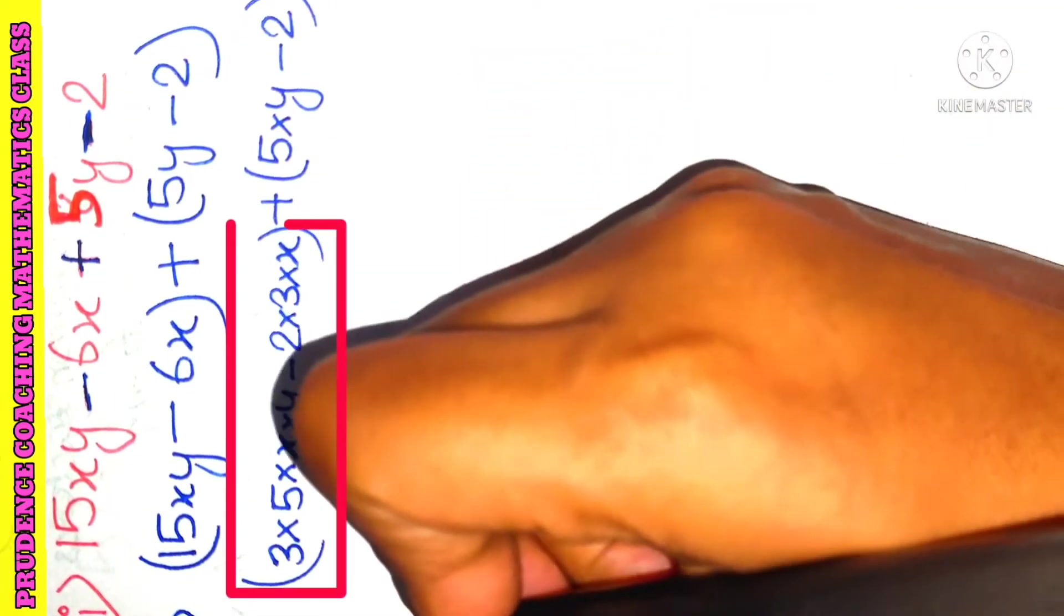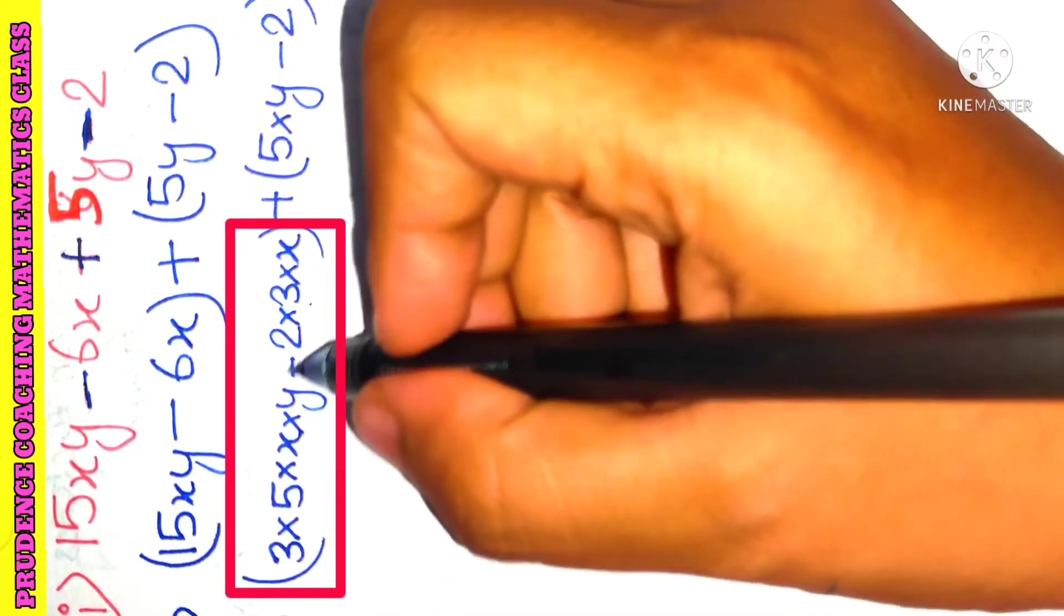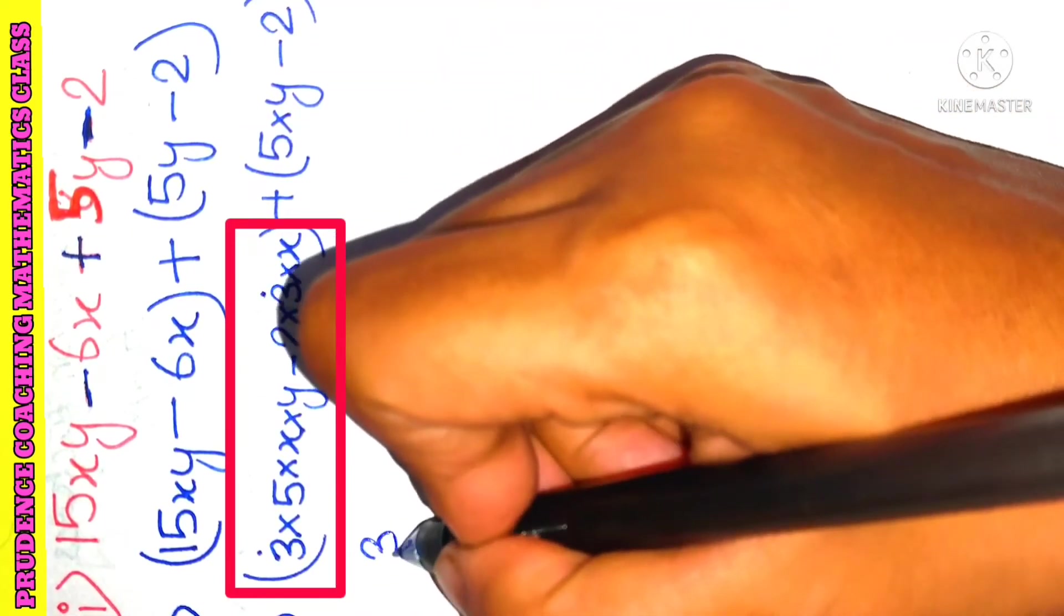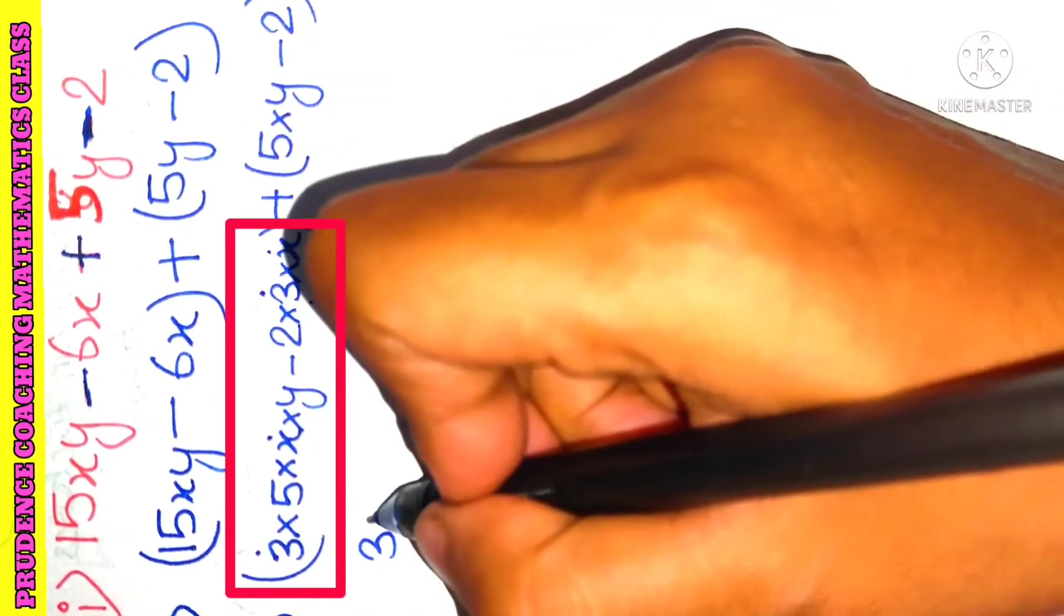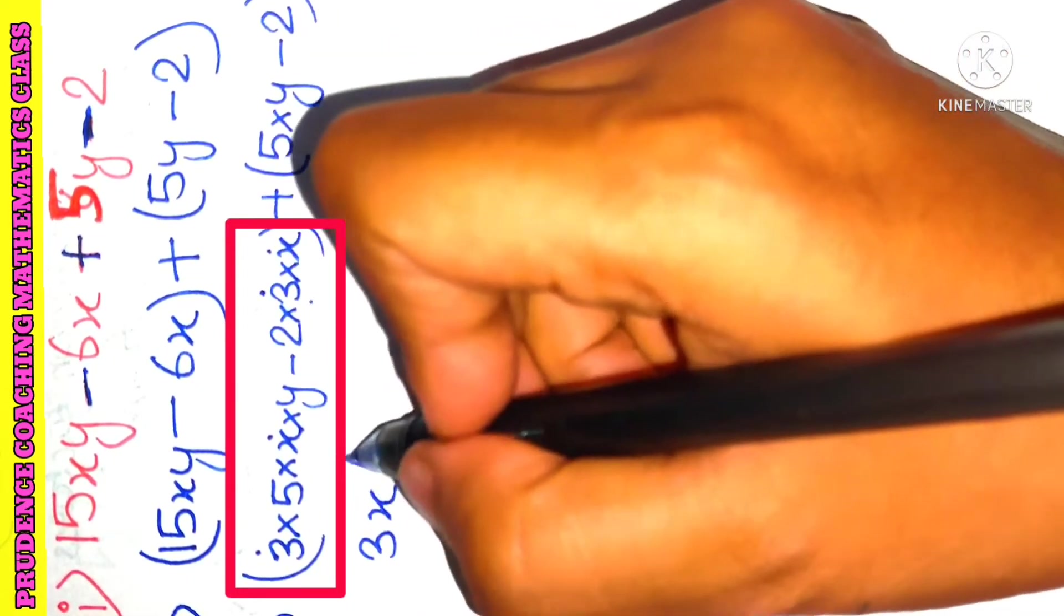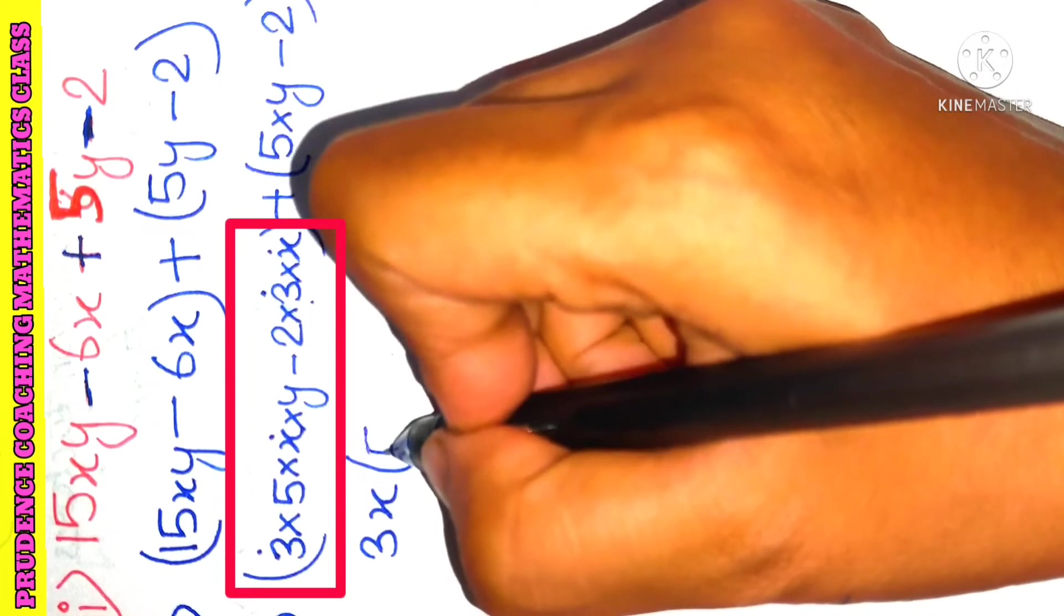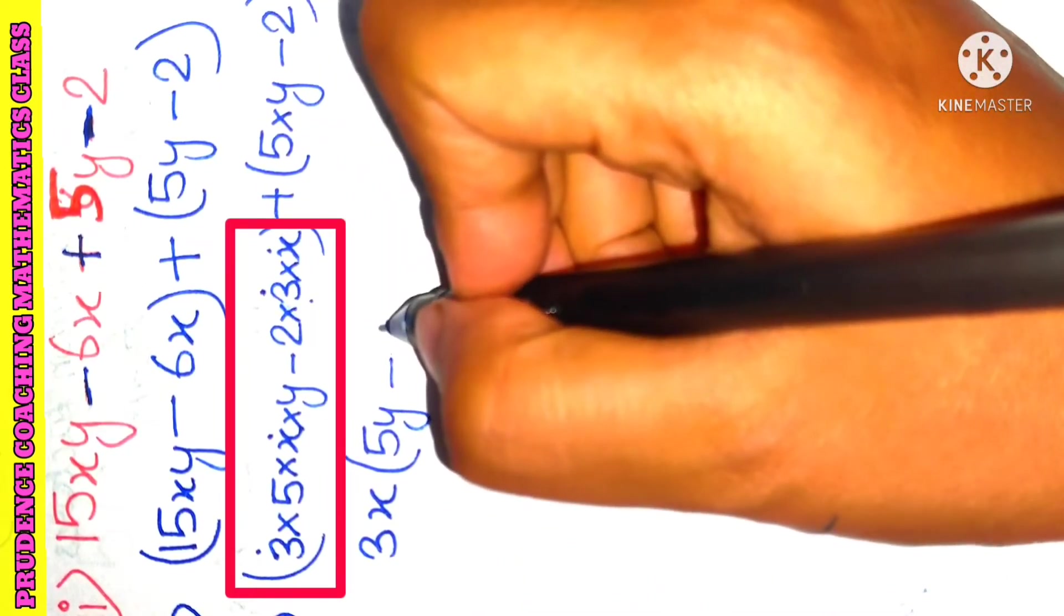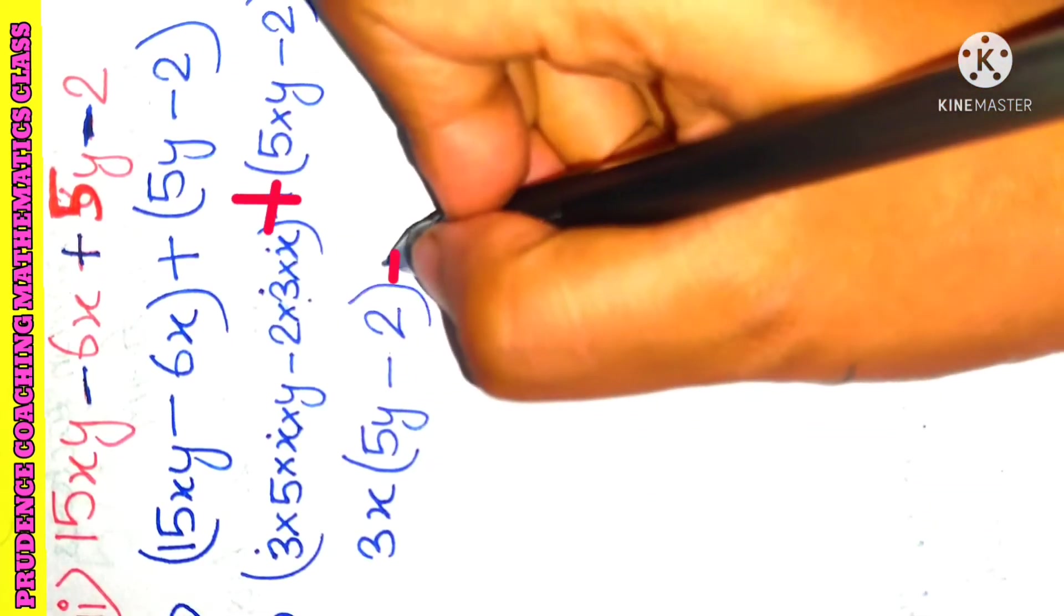So now what you need to see is what is common here. As you can see, here also 3 is there, here also 3 is there, so 3 is common. Here x is there, here x is there, so we can take x common. But no other thing is common. So here we will be left with 5 and y, that is 5y, minus here we have taken 3x so we will be left with 2. So this is left over here.